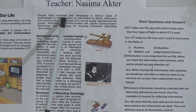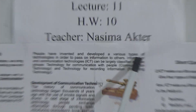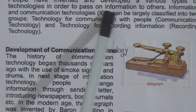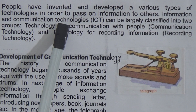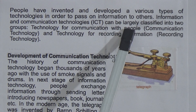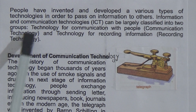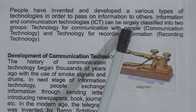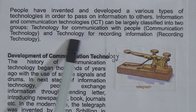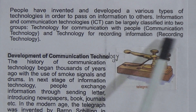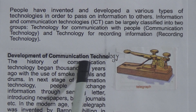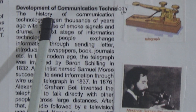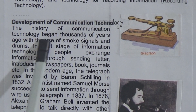People have invented and developed various types of technologies in order to pass on information to others. Information and Communication Technologies, ICT, can be largely classified into two groups: technology for communication with people, called communication technology, and technology for recording information, called recording technology.